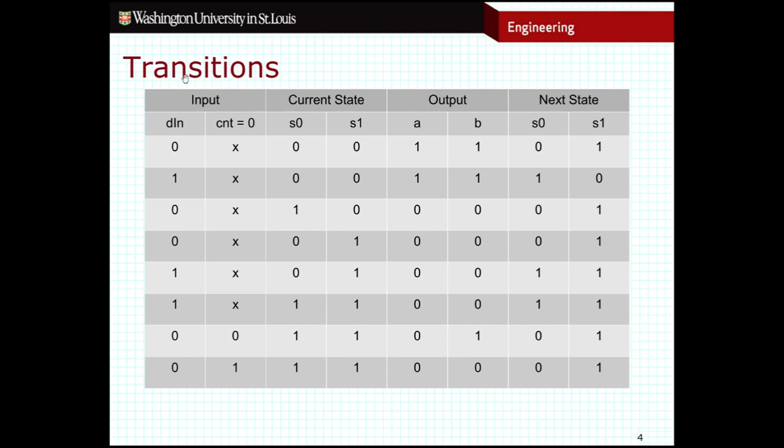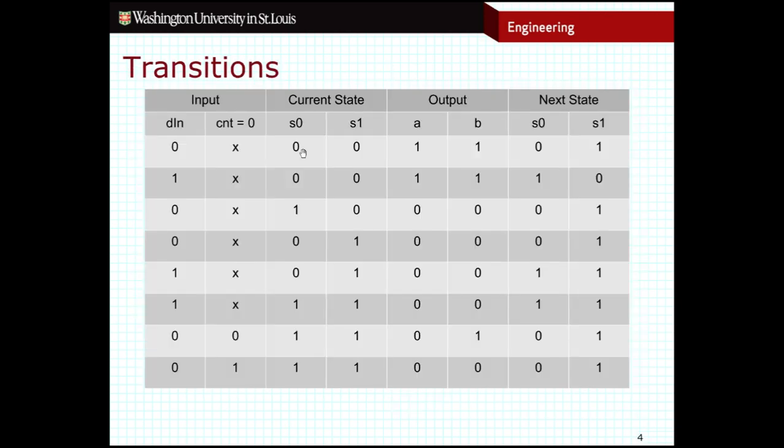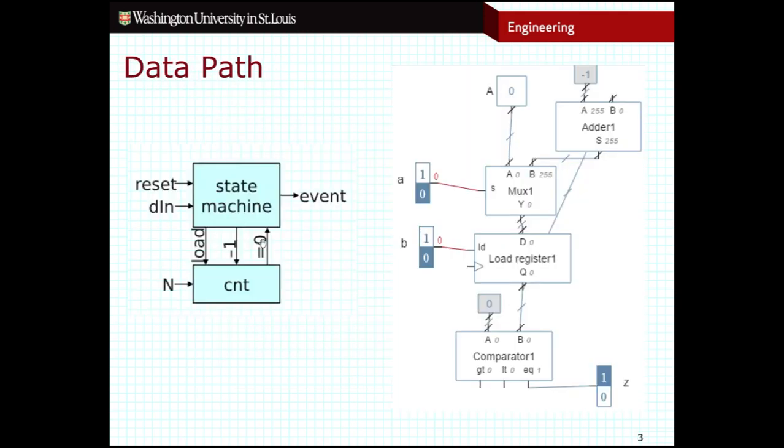Here is a transition table, and you'll notice that under the inputs, I have din listed, which is an input to our finite state machine. But I also have this count equals zero input, which is coming from the data path.